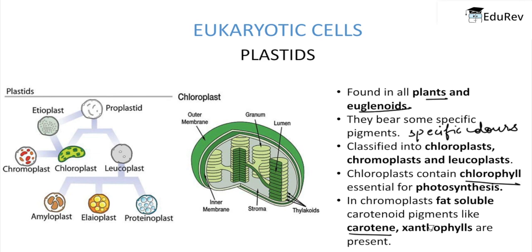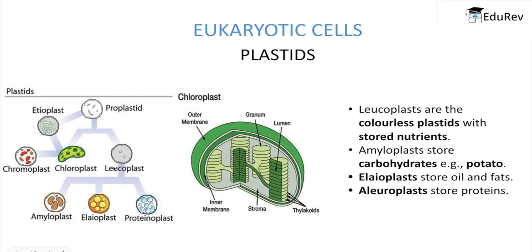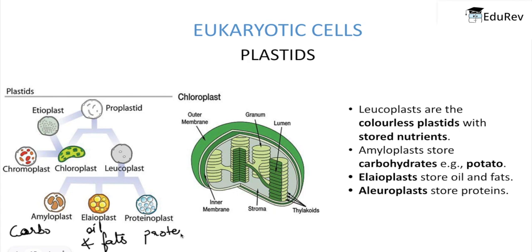Leucoplast are the colorless plastids with stored nutrients and are of three types. First is amyloplast, which stores carbohydrates — for example, potato. Second is elaioplast, which stores oils and fats. Third is aleuroplast, also called proteoplast, which stores proteins.